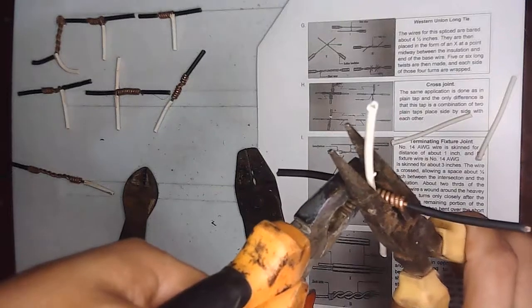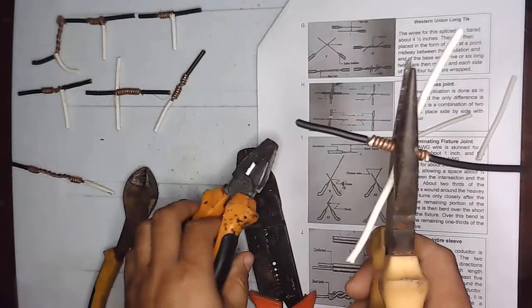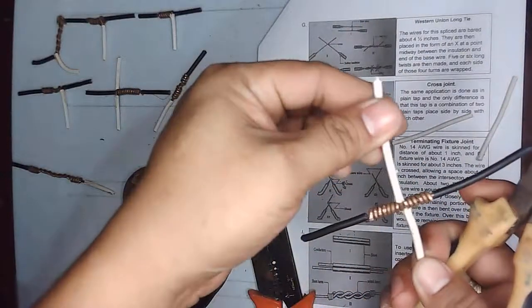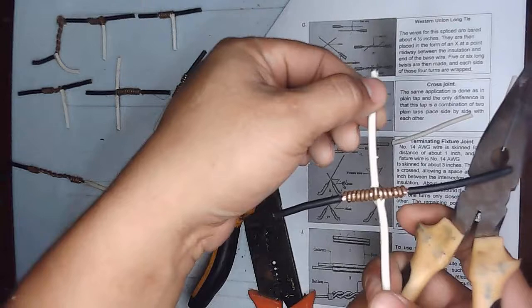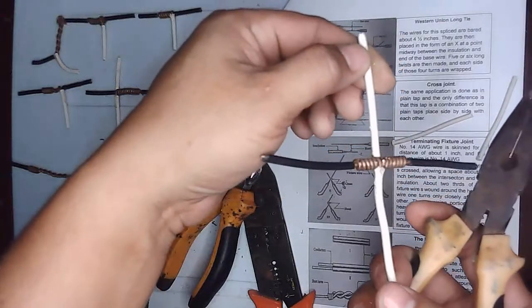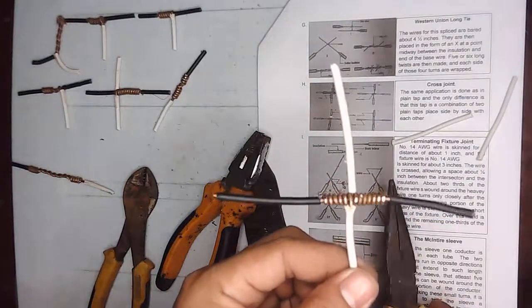So we should tighten it until it cannot move. So it's very strong. This is our finished product for the cross joint.